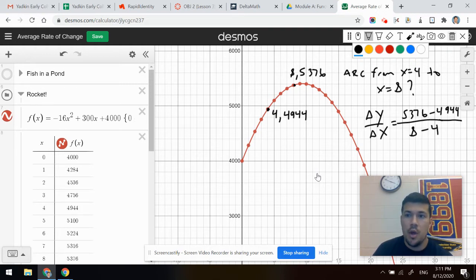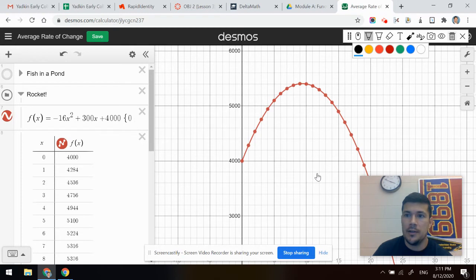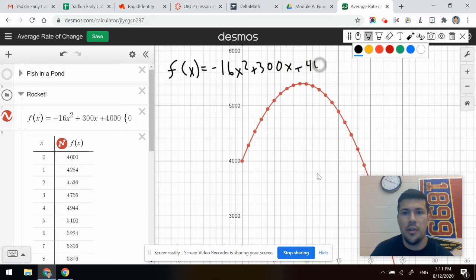So that's a review from the first video. But what if I told you that we can, even if I didn't have the table, let's call this no table, no problem. And if we can't read the graph correctly. So let's say we have just the function, just the equation. We're always looking at all representations. So the equation is negative 16 X squared plus 300 X plus 4000.